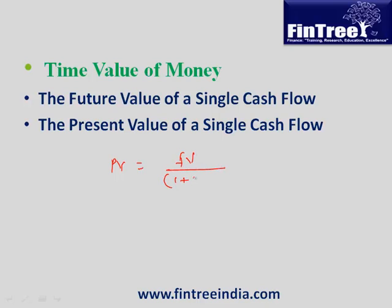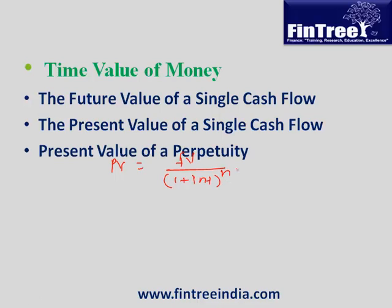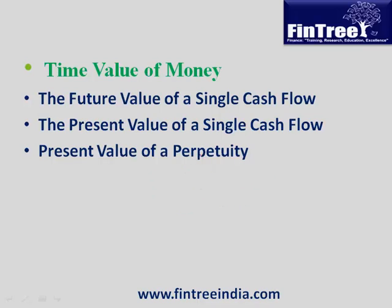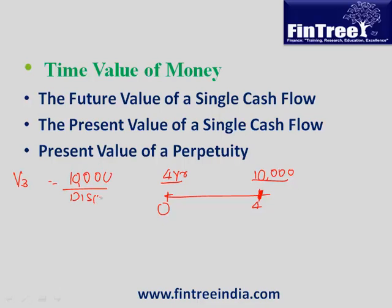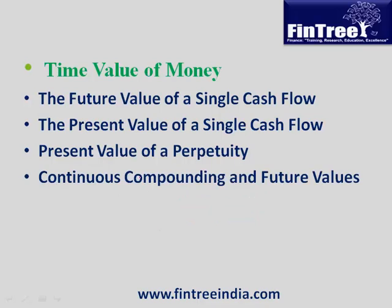Present value of a perpetuity at time zero equals cash flow at time one divided by the discount rate. An important nuance: if a perpetuity starts from year four with the first cash flow at the end of year four, you can fetch the value at time three by dividing cash flow by the discount rate. Then discount that value back only three years to find the value at time zero — not four.